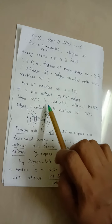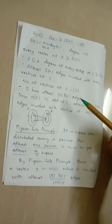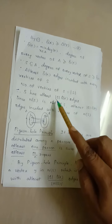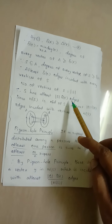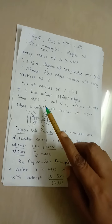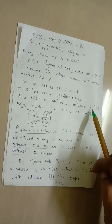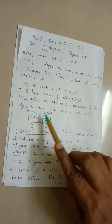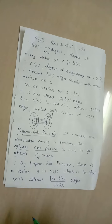Since N(S) is the neighborhood of S, N(S) also has at least |S| · δ(X) edges incident with its vertices.